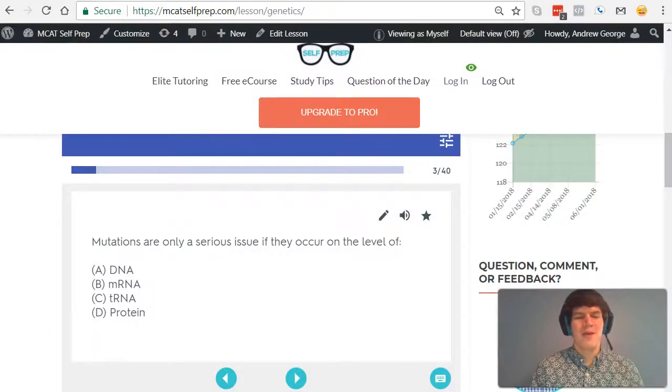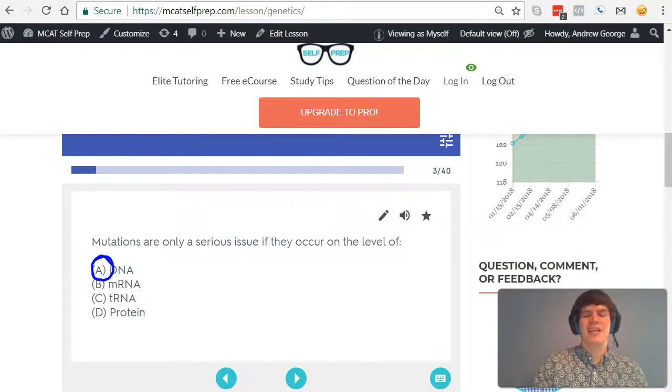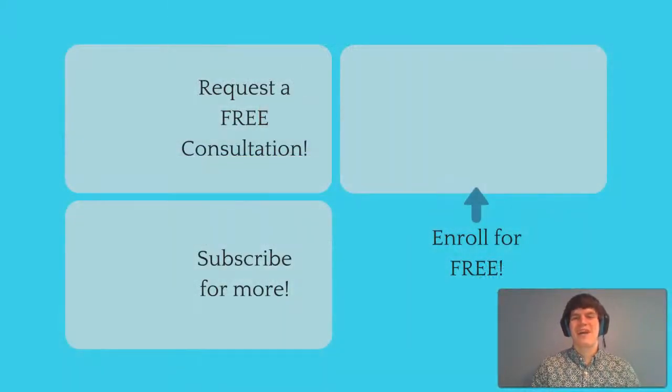Let's take a second look at the question stem. Mutations are only a serious issue if they occur on the level of DNA. That's the correct answer here because DNA is permanent and every single mRNA and protein that's produced thereafter from that DNA is going to be messed up, and that's a serious problem.